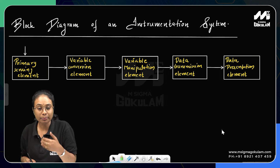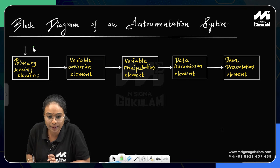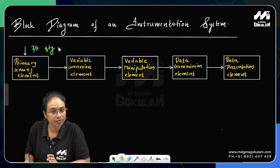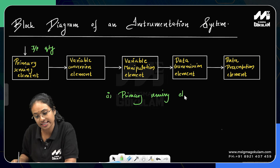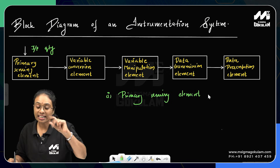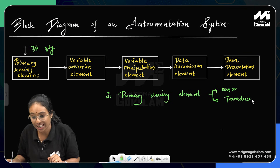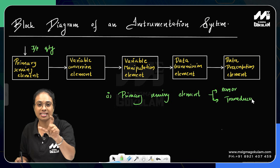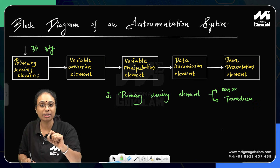The input quantity enters the primary sensing element. This block is composed of two devices: one is the sensor, and two is the transducer. Both devices together form the primary sensing element block.